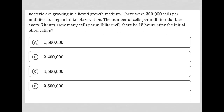This question says bacteria are growing in a liquid growth medium. There were 300,000 cells per milliliter during an initial observation, and the number of cells per milliliter doubles every three hours. So that tells us at time zero, when we first saw these bacteria, we'd have 300,000 cells.